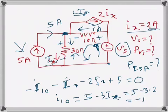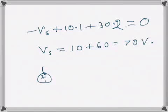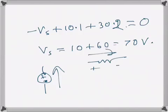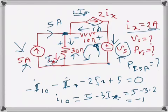Now we need to find the power related to the voltage source VS. The current direction through VS tells us whether it is absorbing or delivering power. In a source delivering power, current exits the positive terminal. Here the current direction indicates the source is absorbing power, not supplying it. So power absorbed is P = V times I, where V is 70 volts.